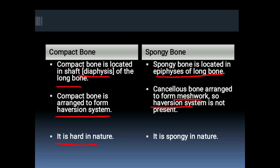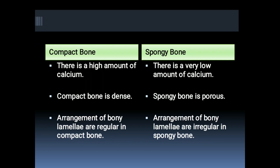Compact bone is hard in nature while spongy bone is spongy in nature. There is a high amount of calcium present in compact bone, while spongy bone has a very low amount of calcium. Compact bone is dense and hard, while spongy bone has a porous arrangement.